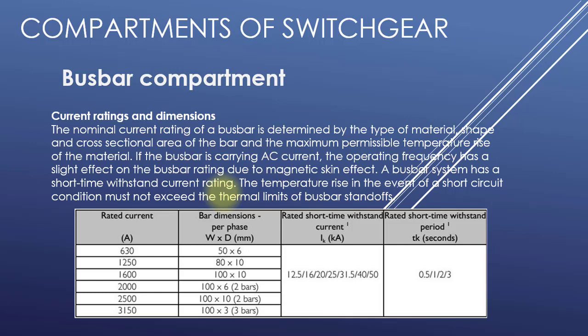A bus bar system has a short-time withstand current rating. The temperature rise in the event of a short circuit condition must not exceed the thermal limit of the bus bar standoff. In the table, the bar dimensions are mentioned as width by depth in mm, along with the rated current. For example, if the dimension is 50 by 6, the rating will be 630 amperes.